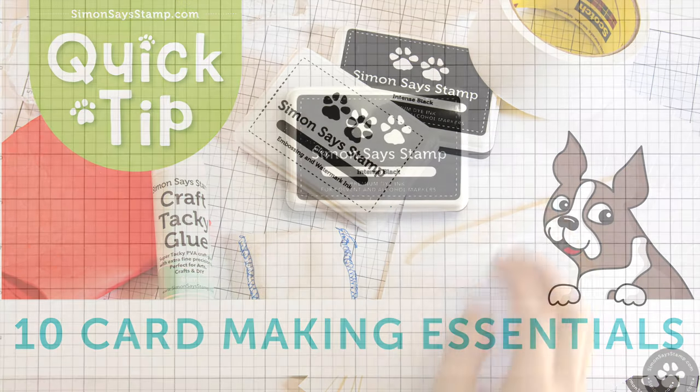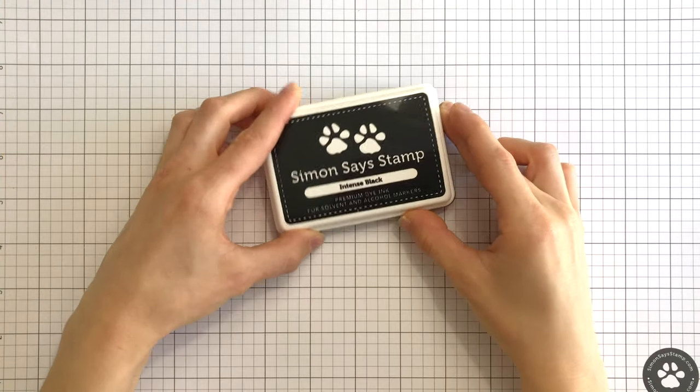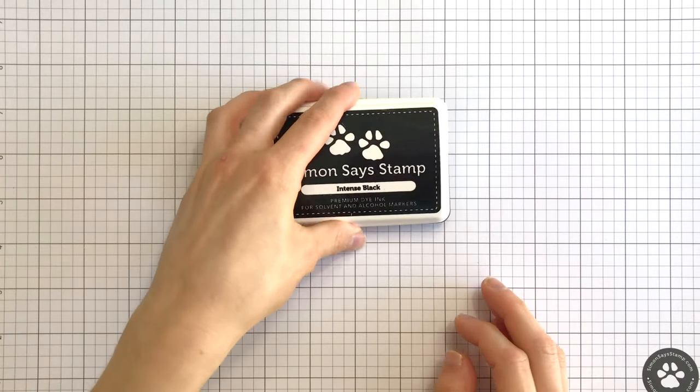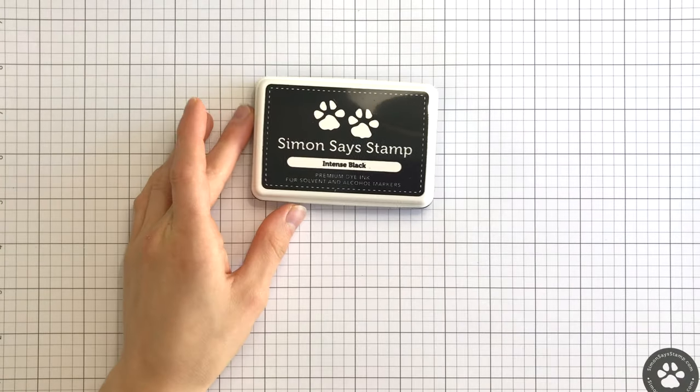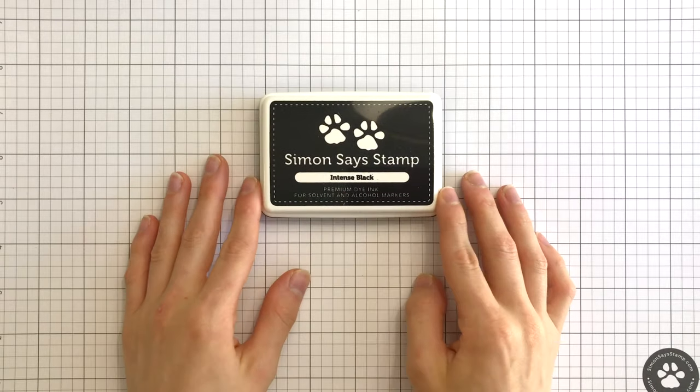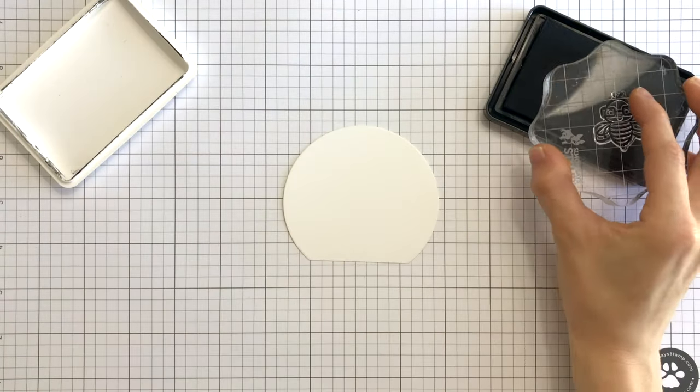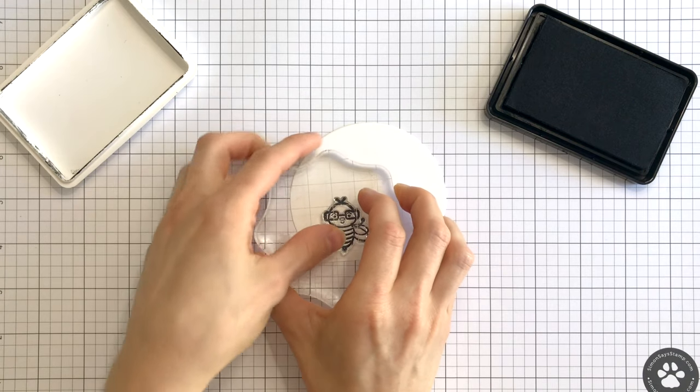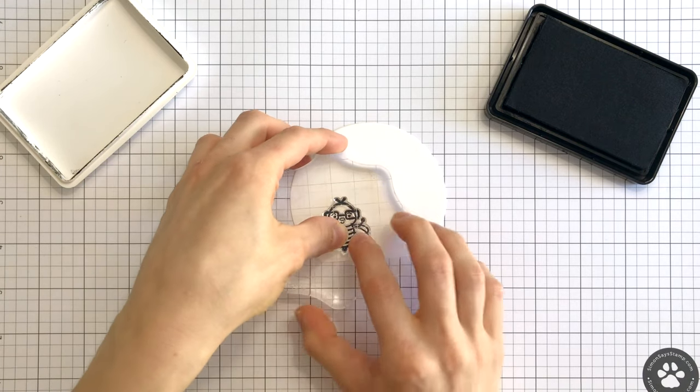Let's start with our Simon Says Stamp Intense Black Ink. Everyone needs a high-quality, crisp black ink in their crafty stash. That's why our Simon Exclusive Intense Black Ink Pad is so invaluable. The ink is not only archival, non-fading, and acid-free, but it is also fast-drying and waterproof.